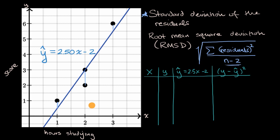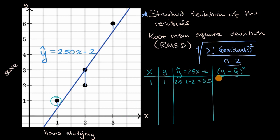First, let's do the data point (1, 1). What is the estimate from our regression line? When x equals one, ŷ is 2.5 times one minus two, which equals 0.5. So our residual squared is (1 minus 0.5) squared, which is 0.5 squared, which equals 0.25.